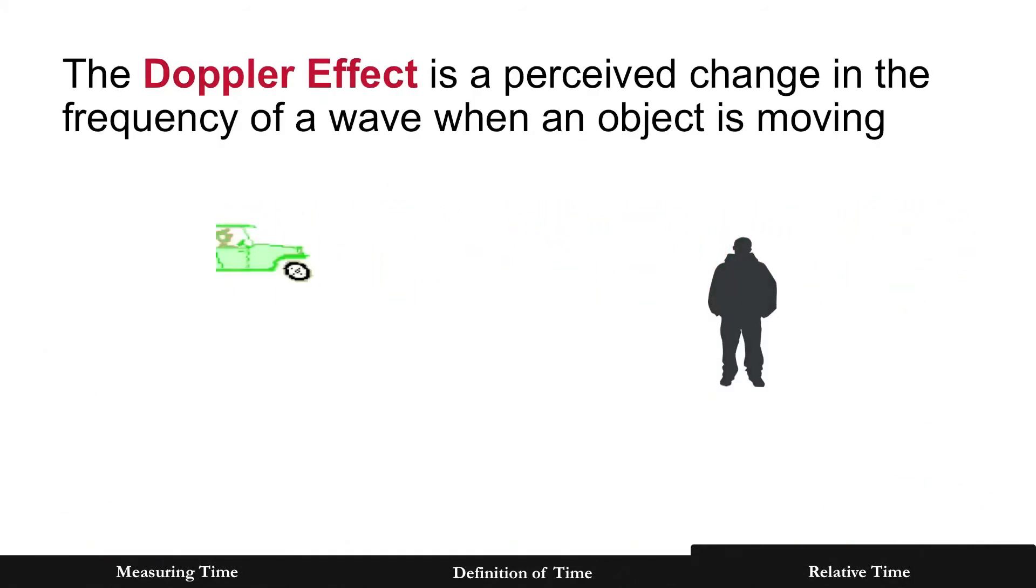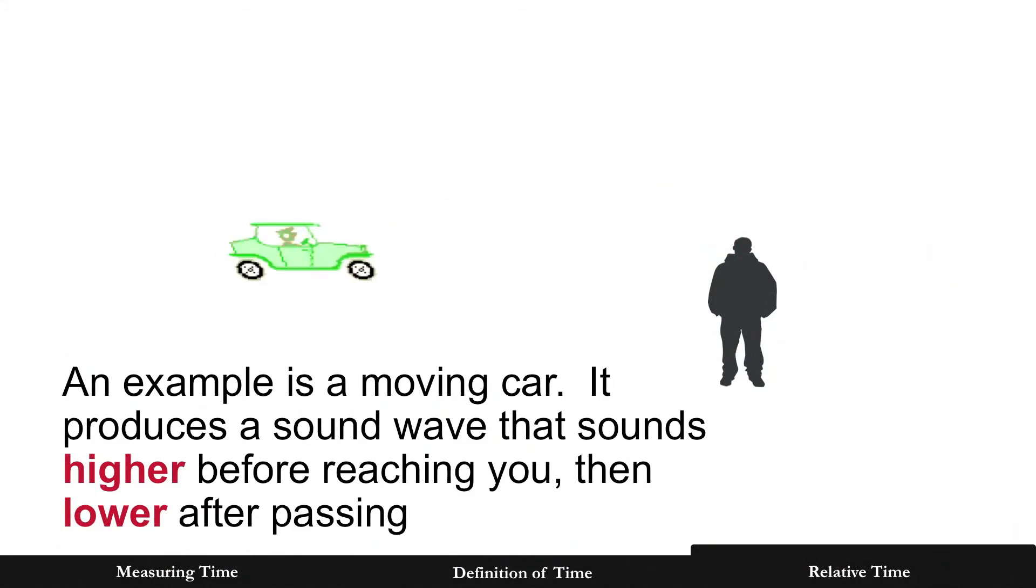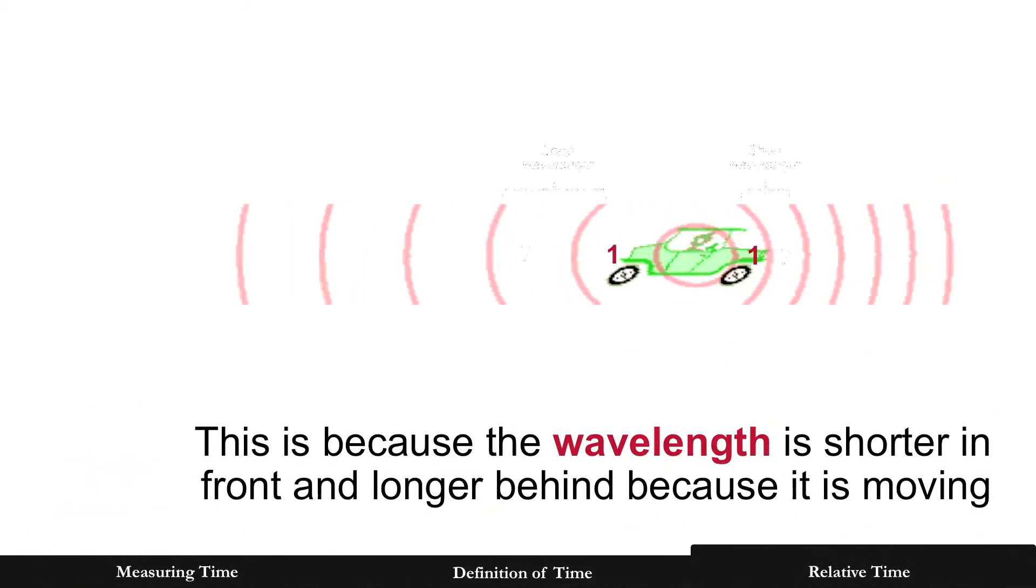The Doppler effect is a perceived change in the frequency of a wave when an object is moving. An example is a moving car. It produces a sound wave that sounds higher before reaching you than lower after passing. This is because the wavelength is shorter in front and longer behind because it is moving.